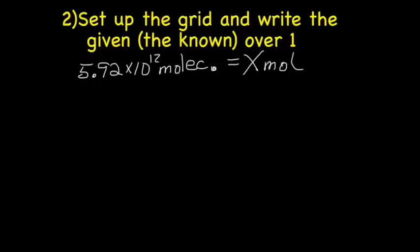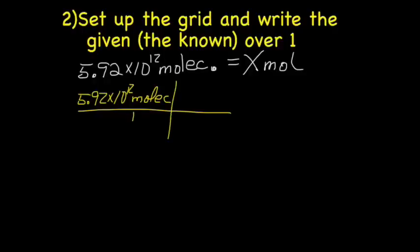Next step is we set up the grid, or the T-chart, and write the given over 1. So, we know we have, our given is 5.92 times 10 to the 12th molecules over 1. Easy enough.